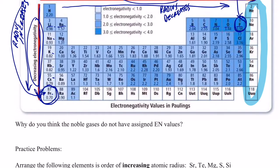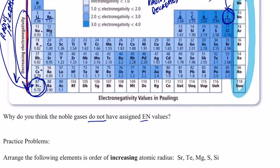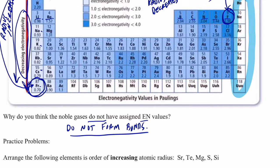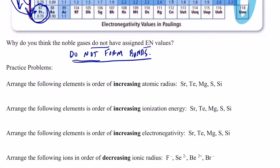Why do noble gases not have an electronegativity value? It relates back to our definition — the ability of an atom to attract electrons in a chemical bond. Noble gases do not form bonds. That's not completely true, as some larger noble gases have been made to react with very electronegative elements, but for the most part noble gases do not form bonds.